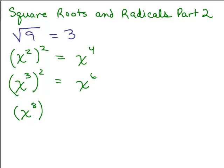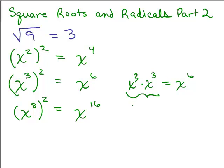For example, x to the eighth squared — again, write the base and multiply the exponents to get x to the sixteenth. If you forget the laws of exponents, you can do it the long way: write x cubed squared as x cubed times x cubed, then add the exponents, or even expand all the way to x times x times x repeated, and you still get x to the sixth.